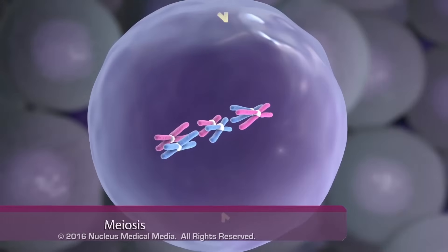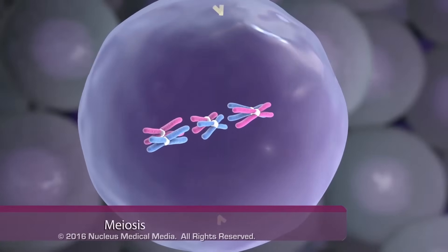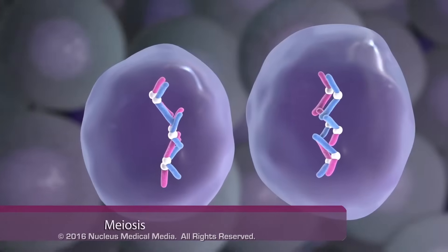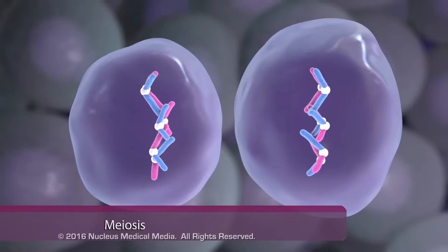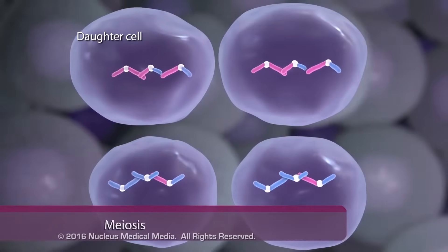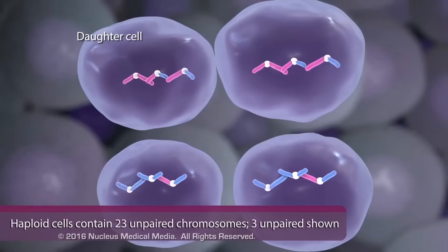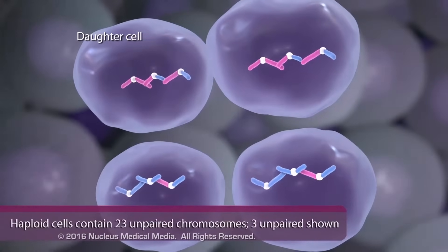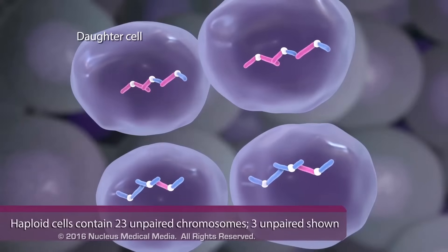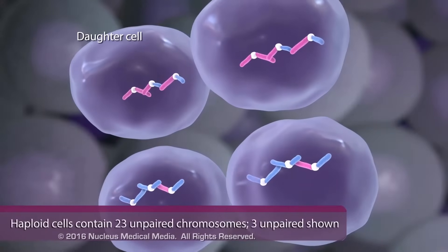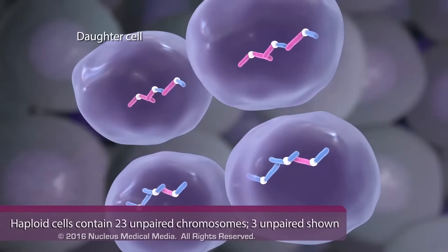In meiosis, there are two divisions in succession, resulting in four daughter cells. Each daughter cell contains half the number of chromosomes of the initial parental cell. The daughter cells are called haploid cells, because they contain 23 unpaired chromosomes.